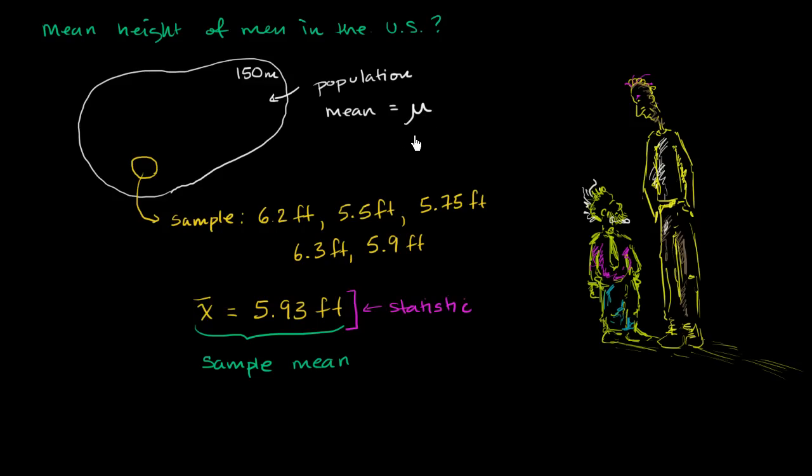And so in a lot of statistics, it's calculating a sample mean in an attempt to estimate this thing that you might not know, the population mean. And these calculations on the entire population, sometimes you might be able to do it, oftentimes you will not be able to do it, these are called parameters.